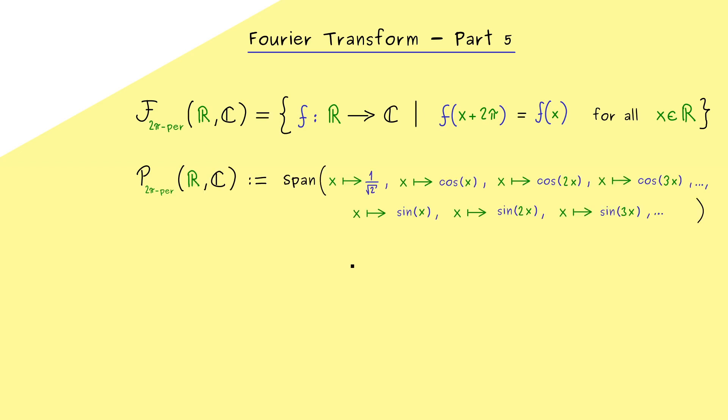These trigonometric polynomials we denote with P and they form a subspace in the space F. This subspace is given by the span of these functions. The only thing that changed here is that we also allow for complex scalars. Now please recall, on this span, on this subspace, we have a very nice inner product. For this video, we can ignore the constant in front and we see essentially this inner product is given by an integral. Now if we want to use that for the approximation of 2π periodic functions, we have to restrict ourselves to integrable functions.